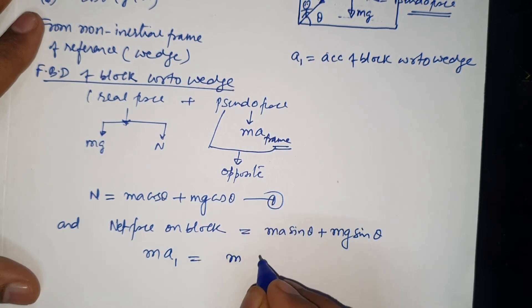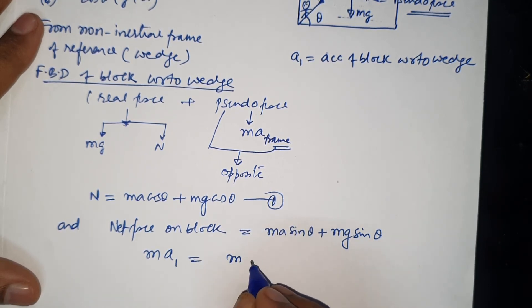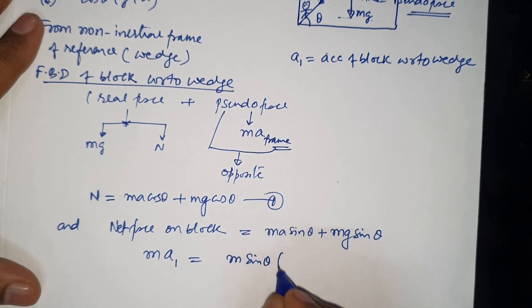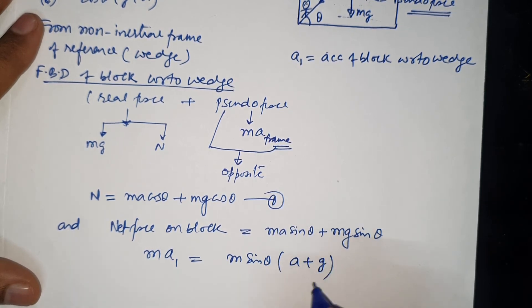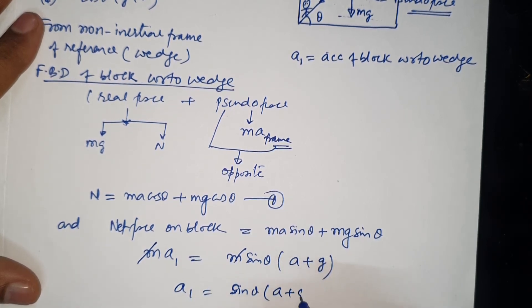m common, and here m sin theta common, a plus g, and a1 is equal to sin theta times (a plus g).